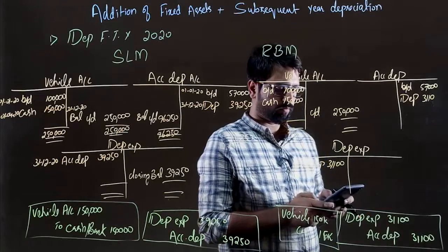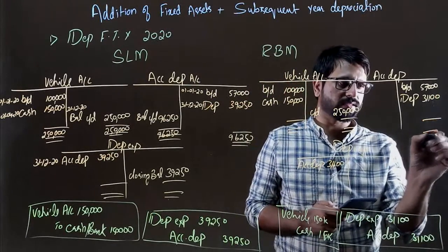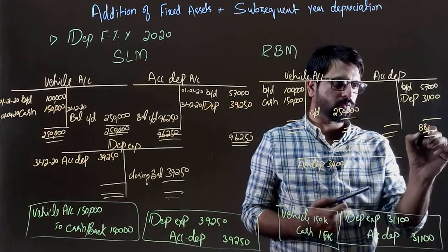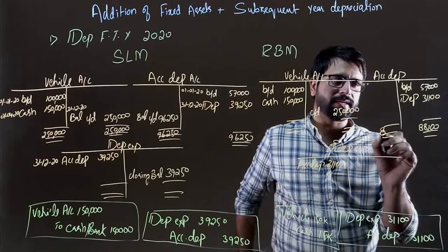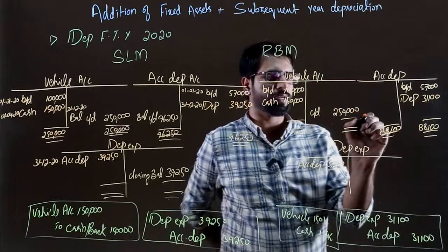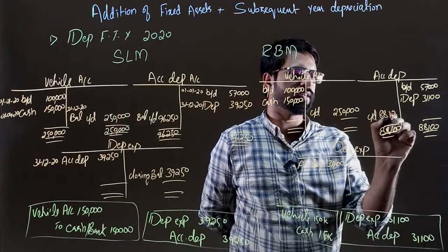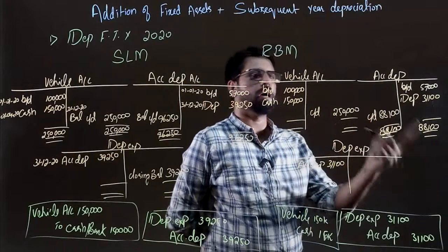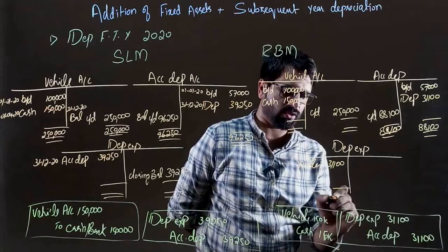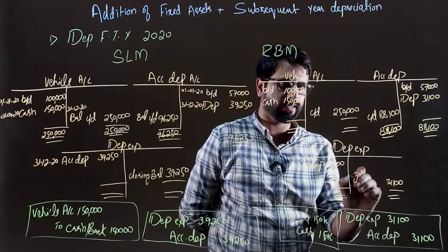We did the entries, posted the ledgers. The total balance will be 88,100. 88,100 depreciation balance — 88,100 year opening balance. Depreciation calculation: depreciation expense 88,100.